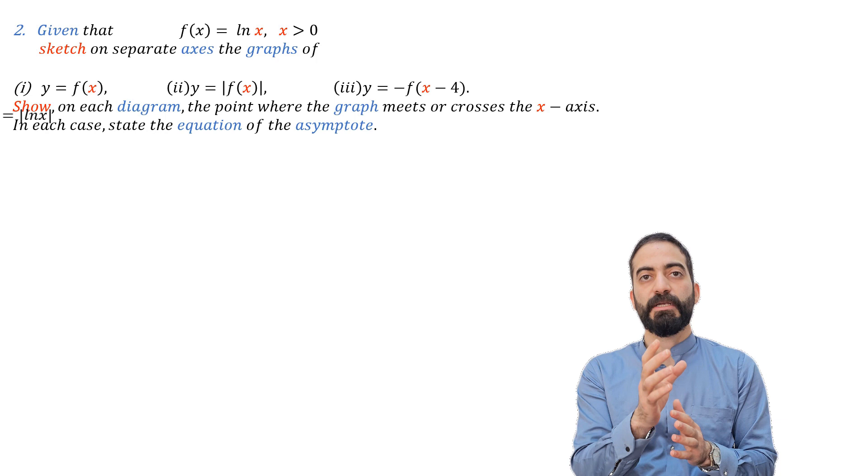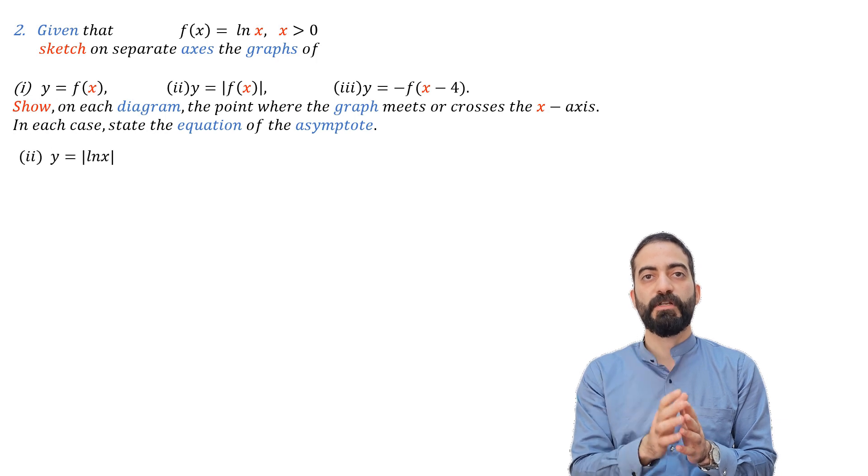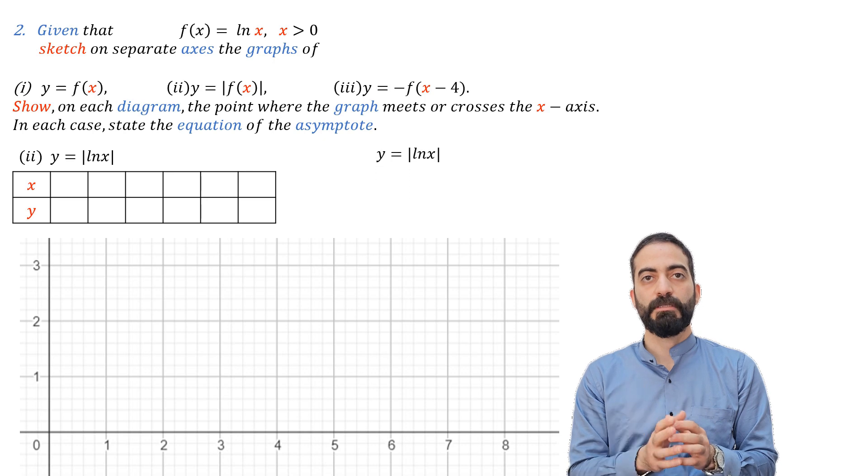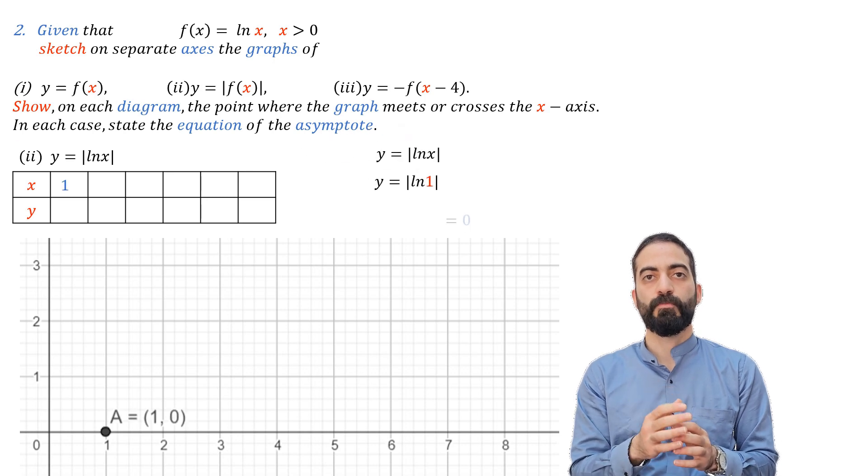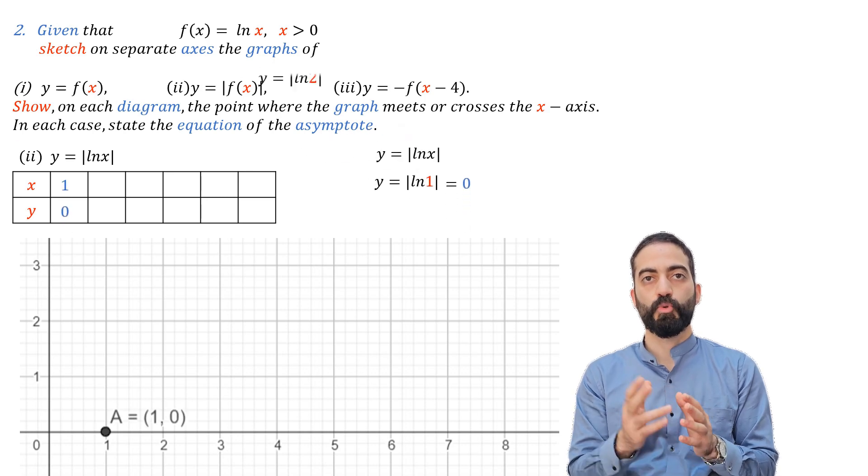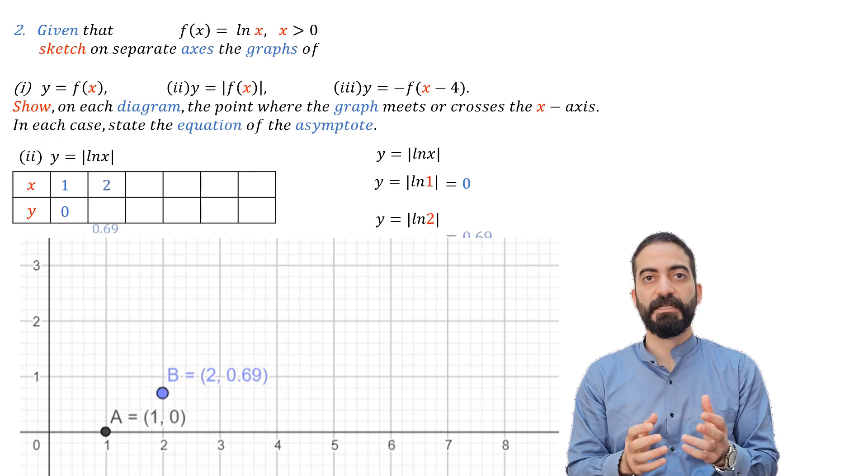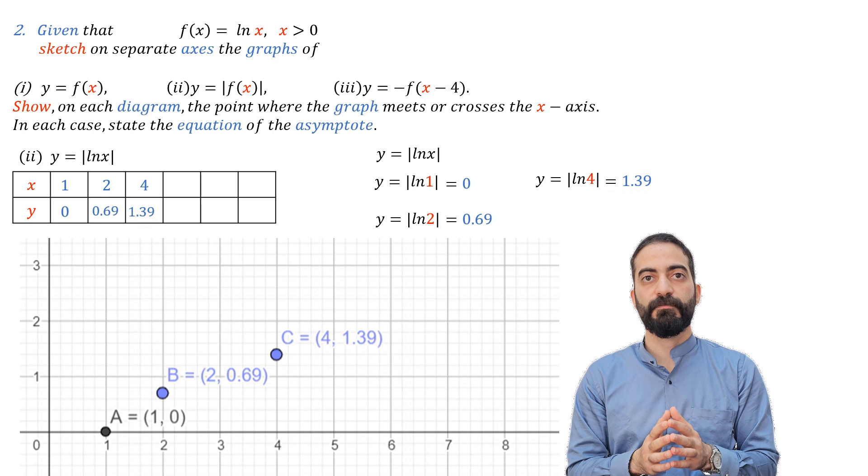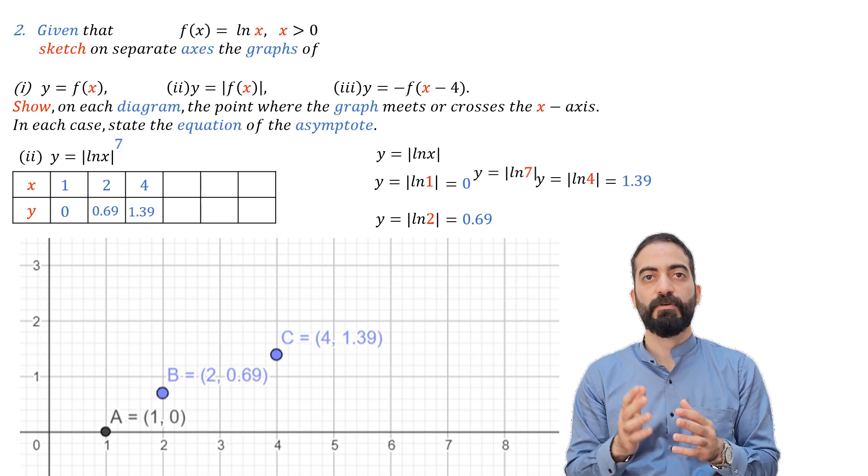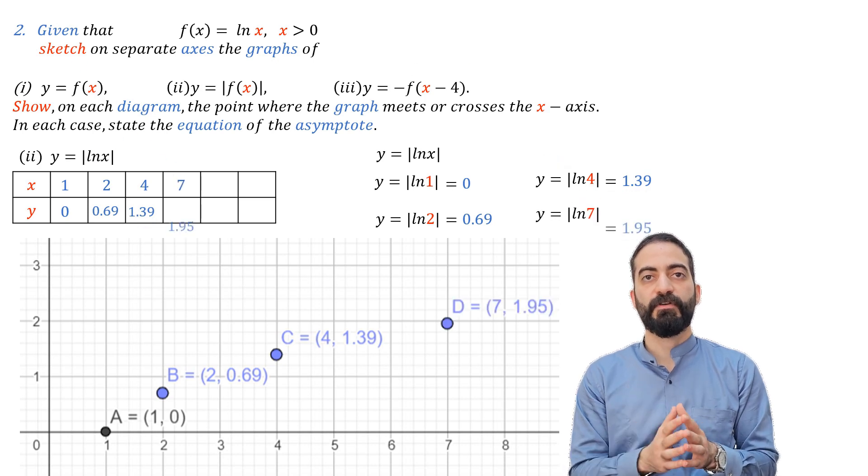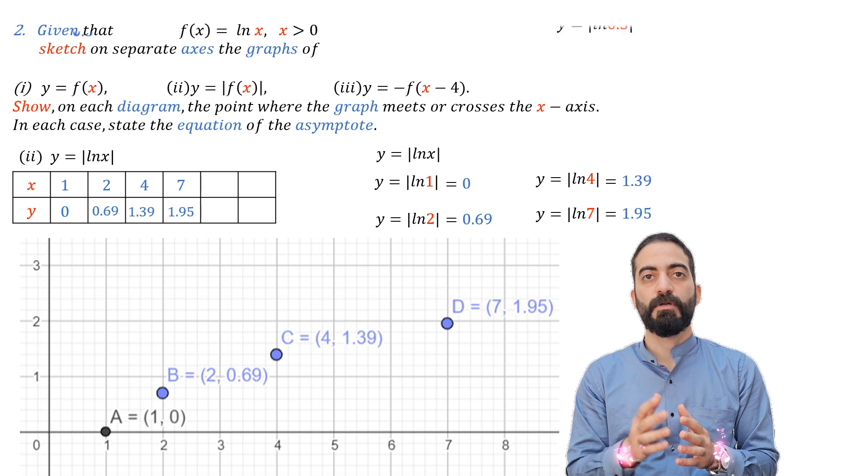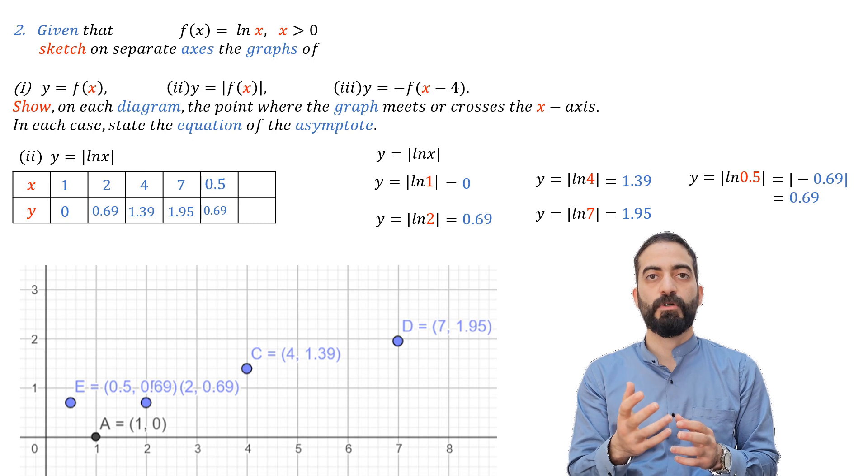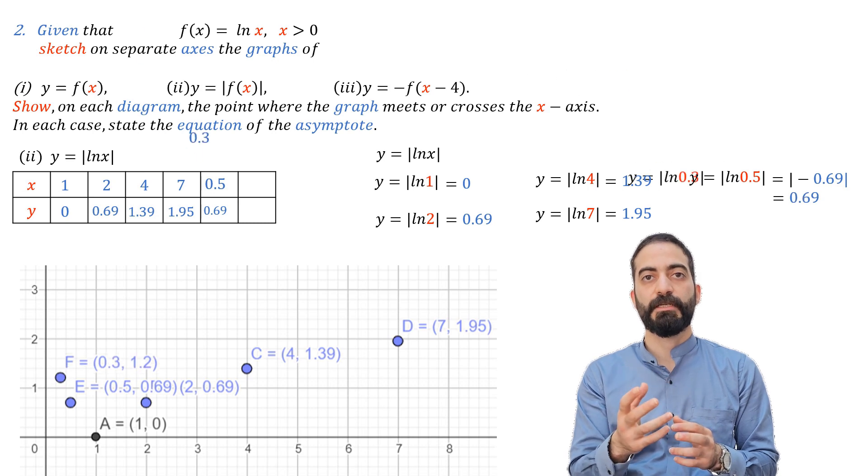Now we come to y equal absolute value of ln(x). When x equals 1, y equals 0. When x equals 2, y equals 0.69. When x equals 4, y equals 1.39. When x equals 7, y equals 1.95. When x equals 0.5, y equals 0.69. When x equals 0.3, y equals 1.2.